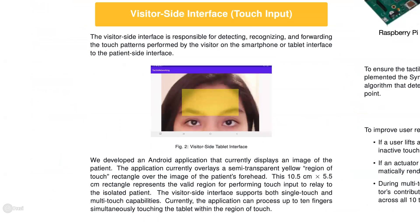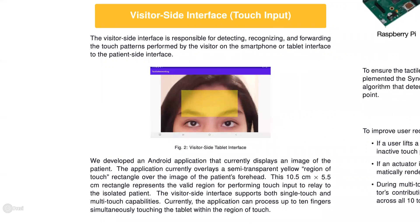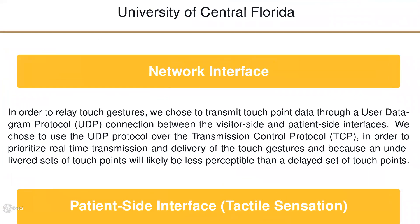For the visitor side interface, we developed an Android application that is responsible for detecting, recognizing, and forwarding single and multi-touch pattern coordinates drawn by the visitor onto the tablet interface in this yellow rectangle, as you see here. These touch patterns are transmitted through a UDP protocol in order to prioritize real-time transmission.